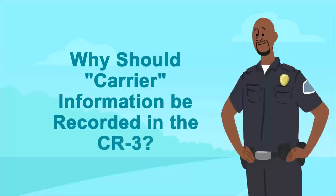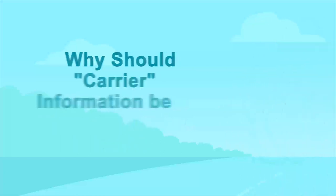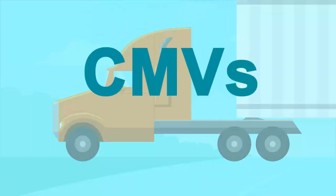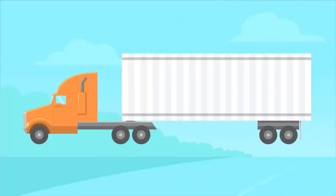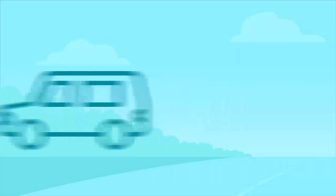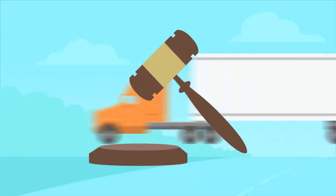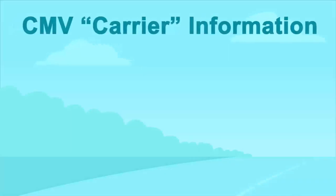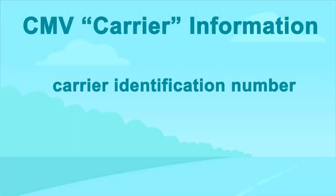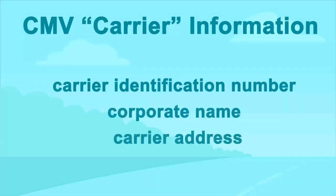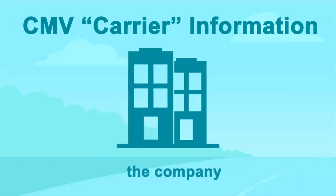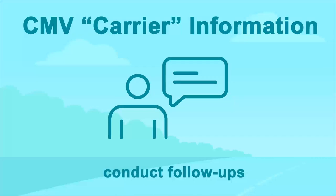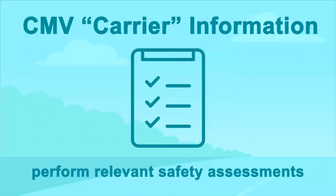Why should carrier information be recorded in the CR3? Commercial motor vehicles are complex vehicles, often with a cab and one or more attached trailers. The type of commerce a vehicle is involved in is critical to determine which laws and regulations apply to the operation of the vehicle. CMV carrier information, such as the carrier identification number, corporate name, and complete physical address of the principal place of business, is crucial to locate the company, conduct follow-ups to gather more information, and perform relevant safety assessments.